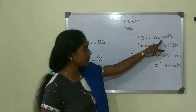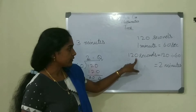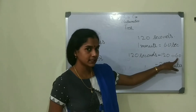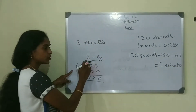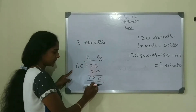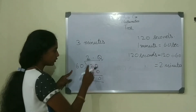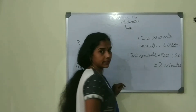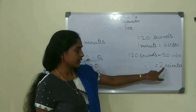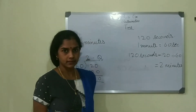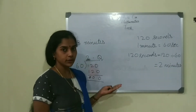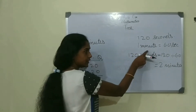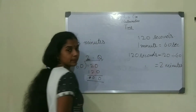120 seconds, when we convert it into minutes, it is 2 minutes. To summarize: converting minutes into seconds, we multiply by 60. Converting seconds into minutes, we divide the number by 60.